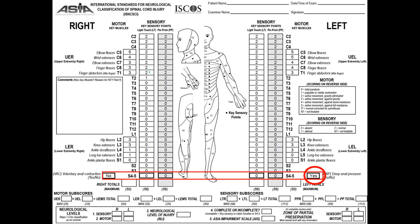Let's do the levels quickly. The sensory level is T1 on the right and T3 on the left. For the motor level, on the right it is C6 and on the left it is C7. The neurological level of injury is the highest of those, so it is C6.